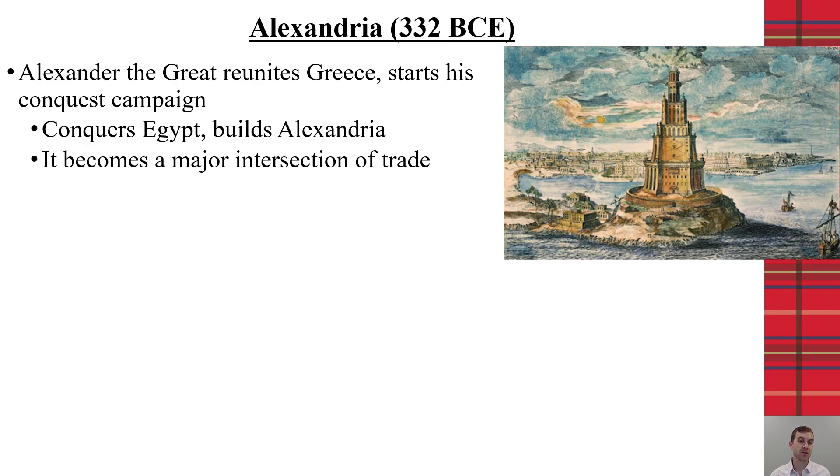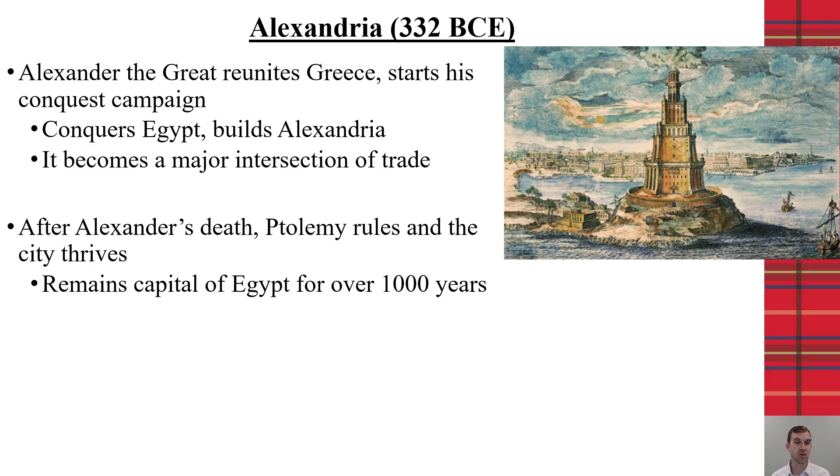Now, Alexander the Great didn't last very long, and he actually died in the early 300s. And then his generals split up all of the world that he had conquered. Ptolemy took over the area, which included Egypt and Alexandria, and helped the city thrive. And it remained the capital of Egypt for over a thousand years because of how successful it was as an intersection point.